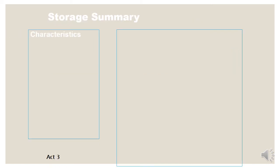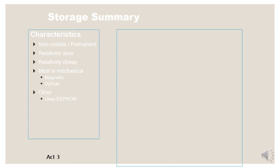Storage memory characteristics: it's non-volatile or permanent, relatively slow, and relatively cheap. Most storage is mechanical — magnetic or optical. Other storage types include flash drives using EEPROM, which are electronic, for example flash memory and SSDs. The two interfaces used are IDE and SATA.